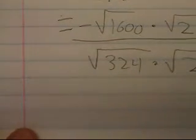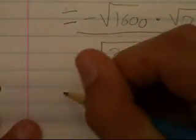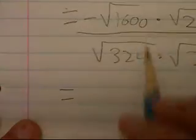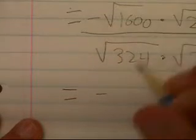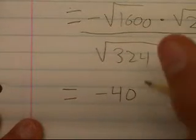After this step, you can pretty much just break it down into dividing, canceling out stage. You can find out that the square root of 1,600 is 40, but since that's a negative, you'll get negative 40 times radical 2